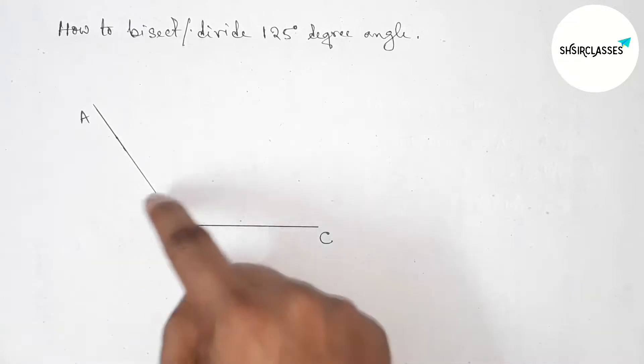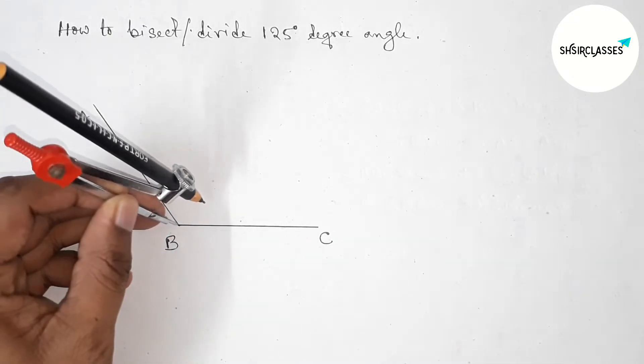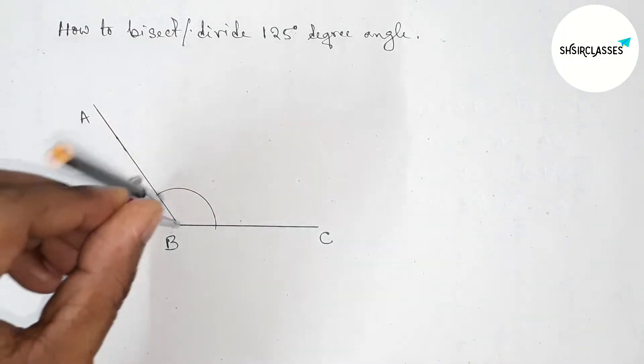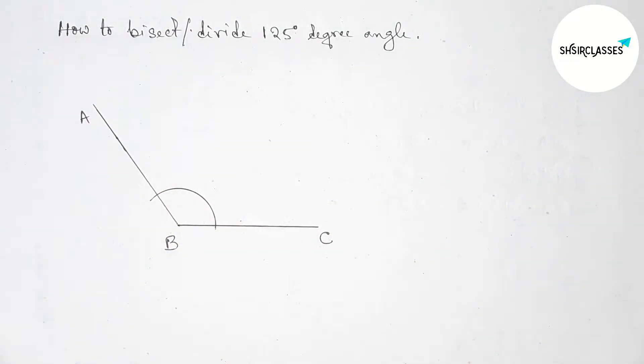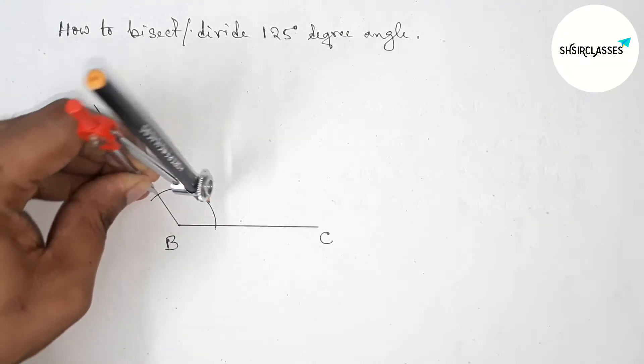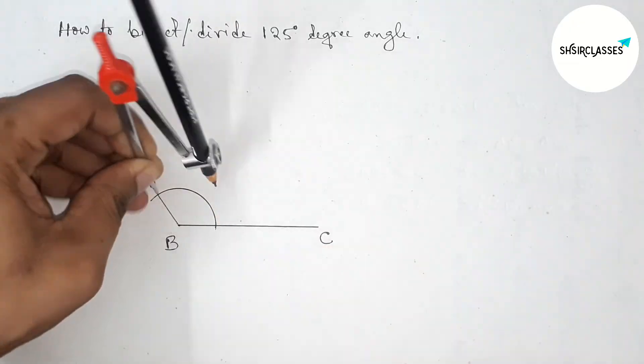Next, bisecting this angle. Put the compass on point B, taking any length, and drawing an arc by this way. Now putting the compass here and taking greater than half of this, by this way...